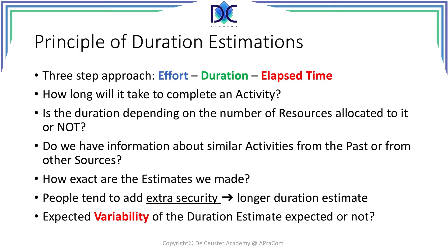A second element relates to historical information. Do we have information about similar activities that we did in the past? Or do we have other sources that can give us an idea about the duration or the effort of the activity?